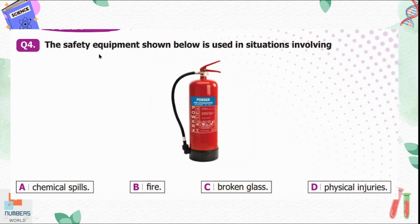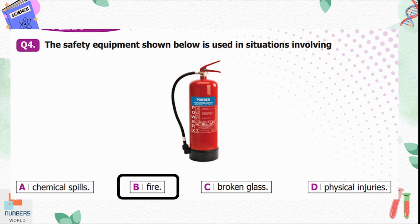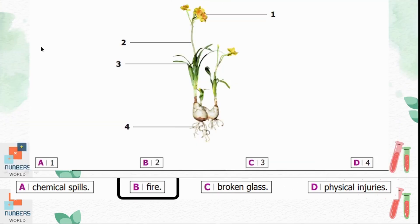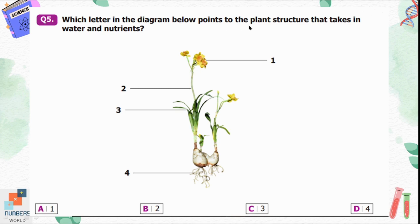Question number four: the safety equipment shown below is used in situations involving option A, chemical spills; B, fire; C, broken glass; D, physical injuries. We can see this is a fire extinguisher, which is safety equipment for situations involving fire. Question number five: which letter in the diagram below points to the plant structure that takes in water and nutrients? The roots take in water and nutrients from the soil, so option D is correct.